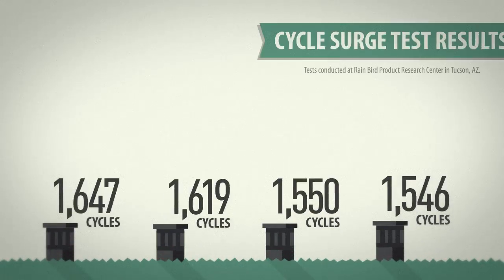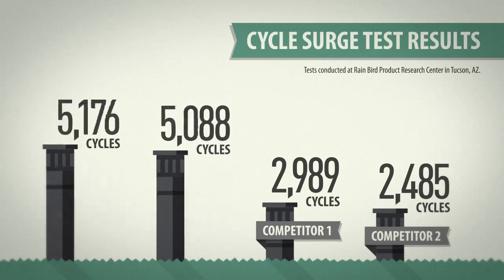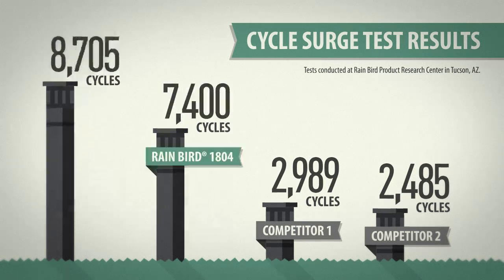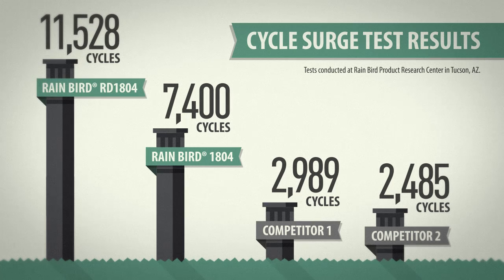The competitive sprays cried uncle after 3,000 cycles or less, but Rain Bird 4-inch sprays kept going, lasting thousands of cycles more without breaking a sweat.